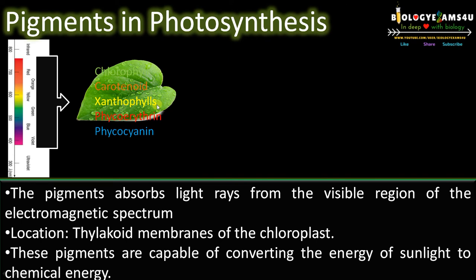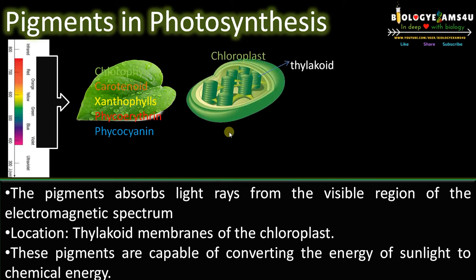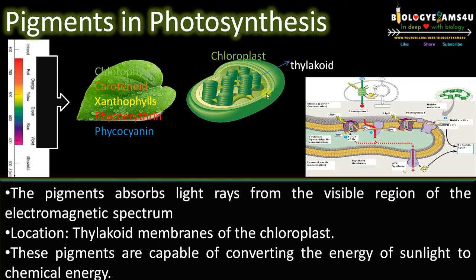These pigments are located inside an organelle called chloroplast. This is a chloroplast, and the exact site of the pigment is a granum of the chloroplast. Each granum is made up of sac-like structures placed one above the other, called thylakoids. So the exact site of the pigment is the thylakoid membrane of the chloroplast.